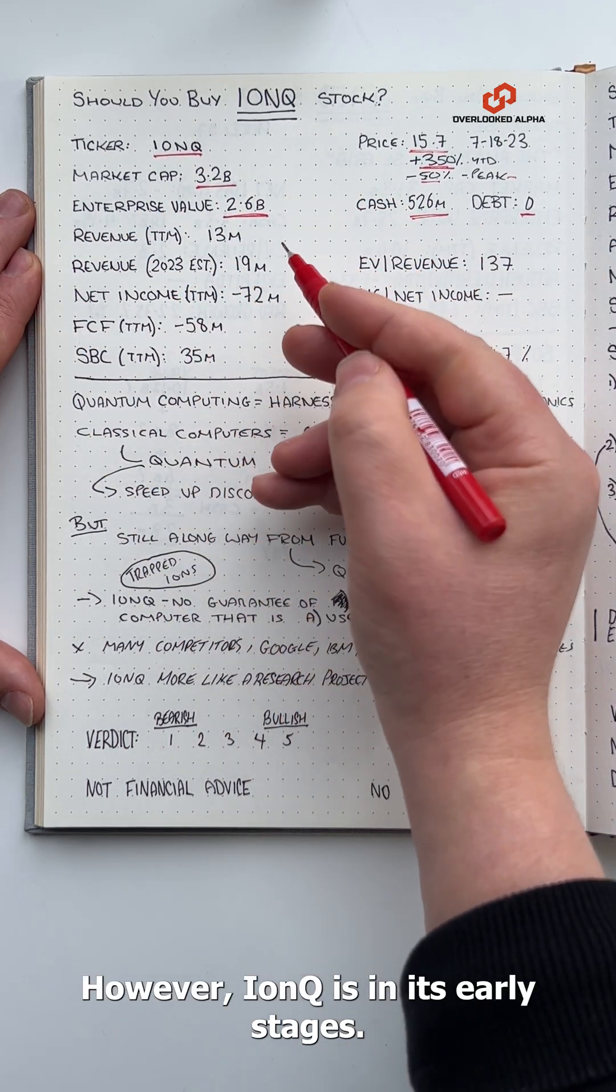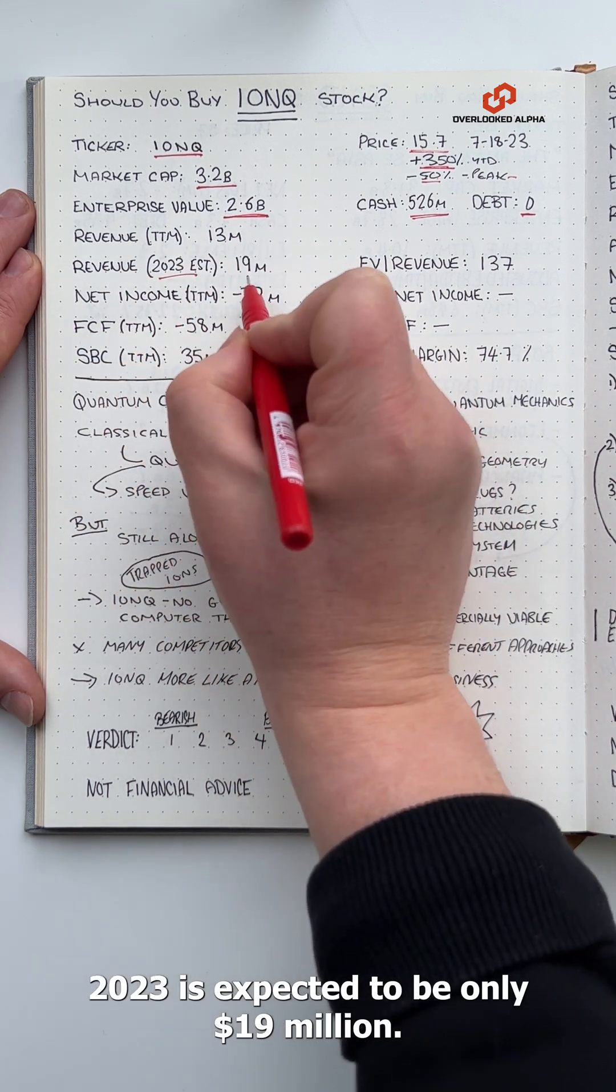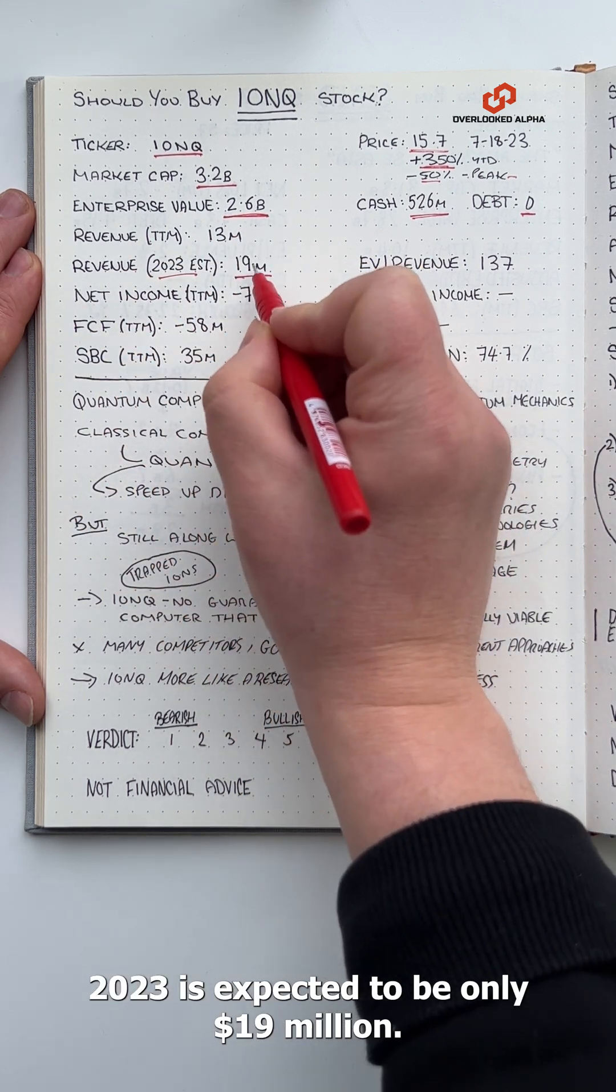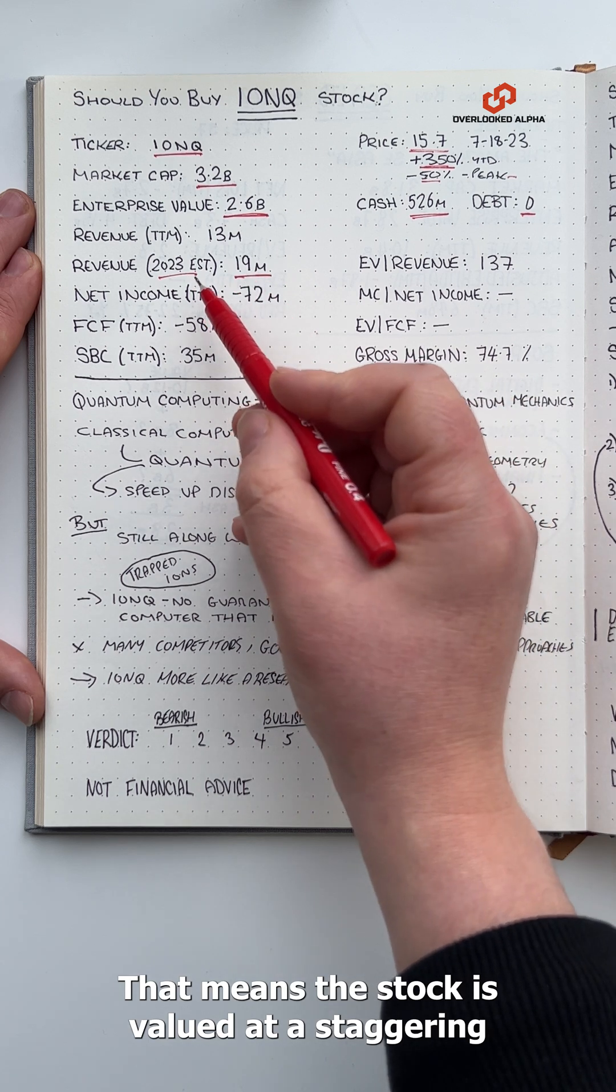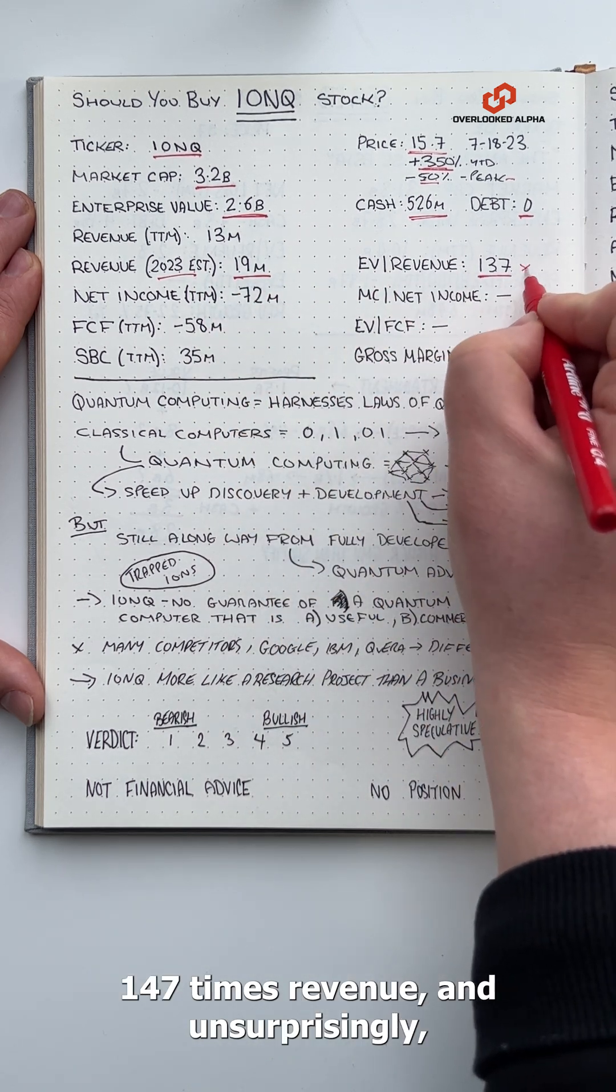However, IonQ is in its early stages. Revenue for 2023 is expected to be only $19 million. That means the stock is valued at a staggering 137 times revenue.